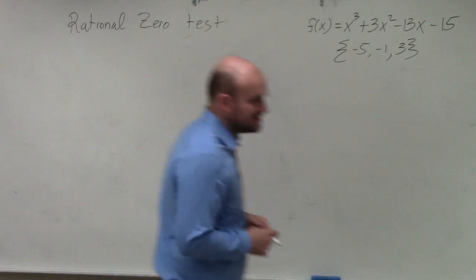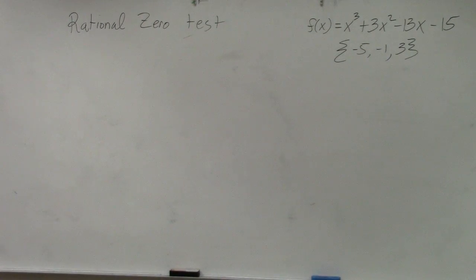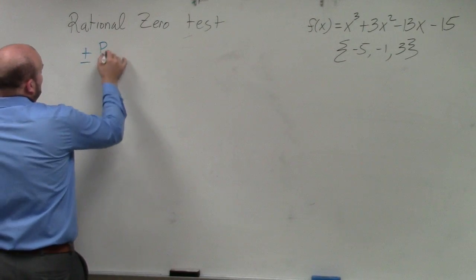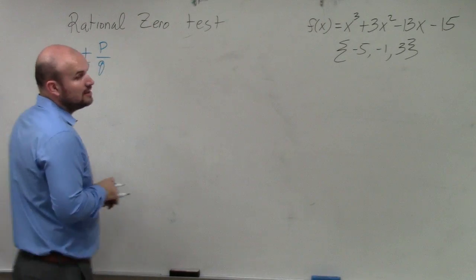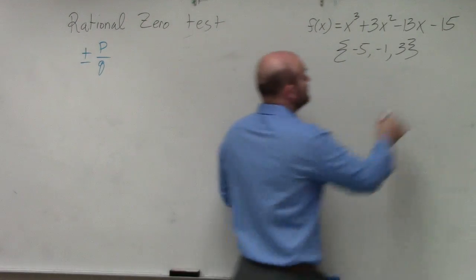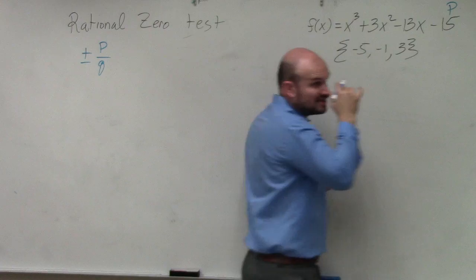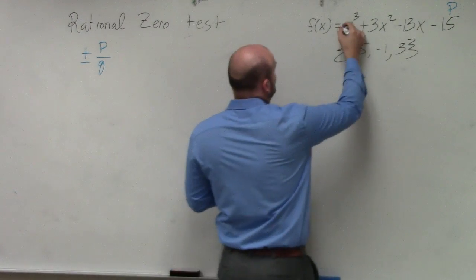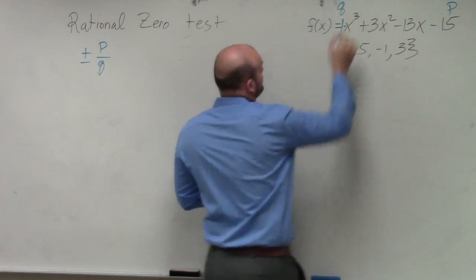The rational zero test is pretty simple. The rational zero test is basically the factors of P over Q. To understand what P and Q are, P is always going to be your constant of your polynomial, always. Q is always going to be your leading coefficient.